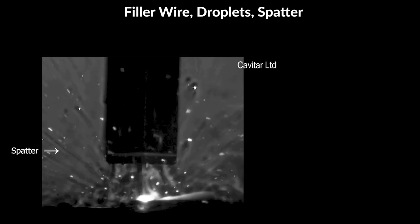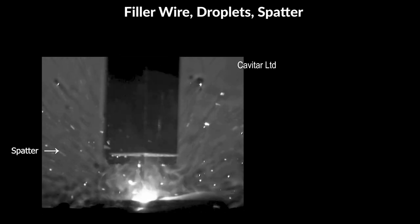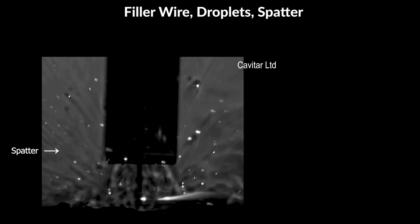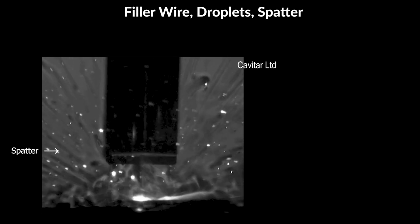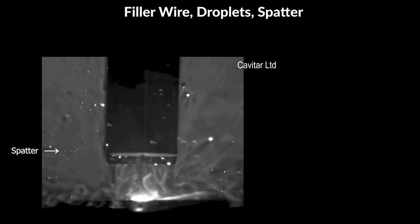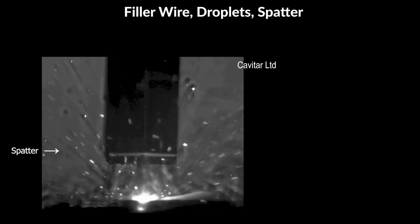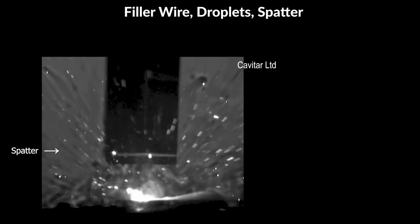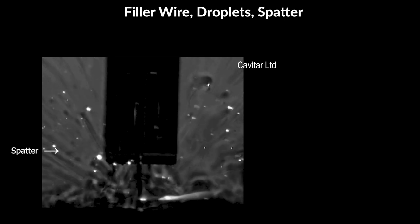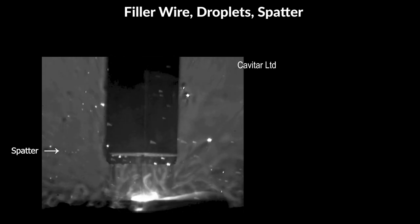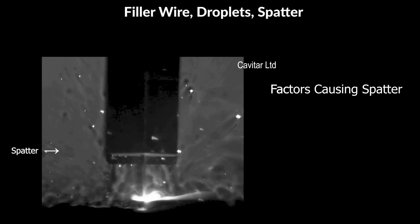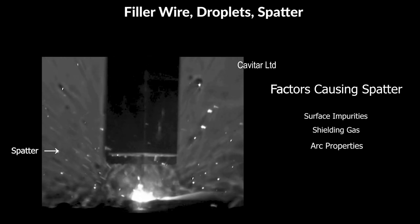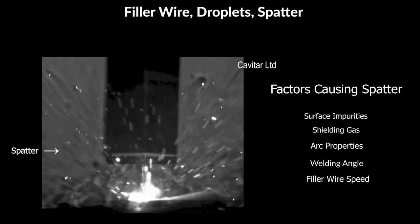Spatter consists of weld material droplets that splash around the workbench or workpieces during the welding process. Due to its high temperature, spatter can cause damage to the working area if it is not prepared for, and it can leave undesired round marks on the finished product. In addition to visual defects, spatter marks can cause corrosion. Spatter can originate from either filler wire or the melt pool and is especially typical of GMAW. Factors that can cause spatter include impurities on the workpiece surface, some shielding gases, certain properties of the arc, welding angle, and the filler wire speed.